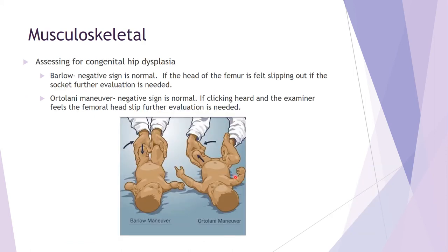Reviewing the hip dysplasia tests with pictures: for the Barlow sign, negative is normal. Move the legs up and toward the stomach; if you feel the femur slip out of the socket, further evaluation is needed. For the Ortolani maneuver, negative is normal. If you hear clicking or popping as you move the legs outward, that's a positive sign suggesting possible congenital hip dysplasia.